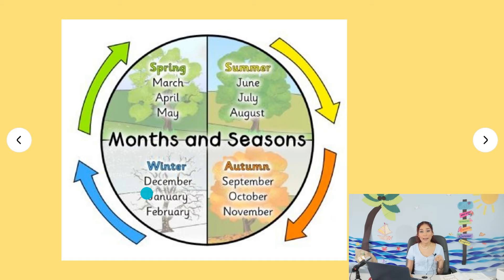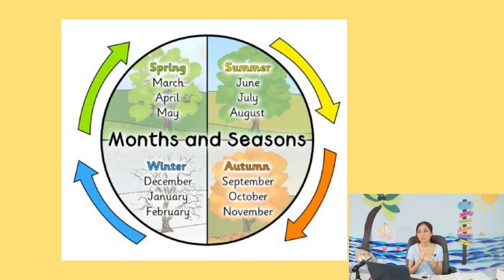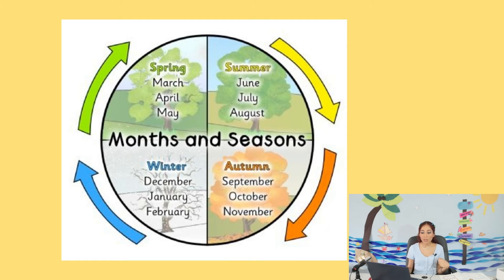Winter keeps going all the way to January and February. Here in Mexico we don't have snow, but sometimes it gets cold enough to wear a sweater or gloves. We wear clothes to keep us warm because in winter it's cold. So we have winter in December, January, and February.